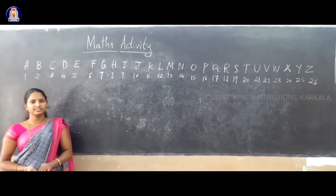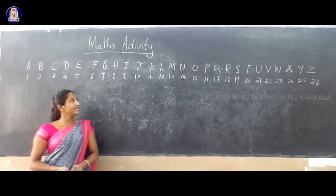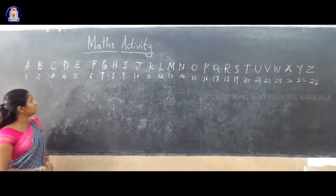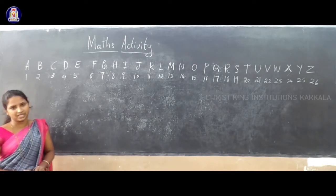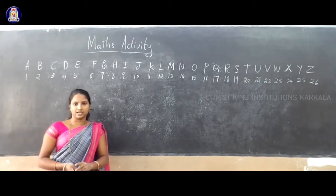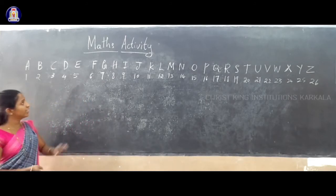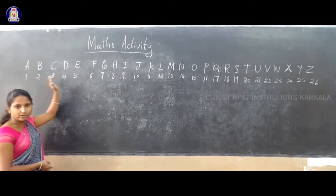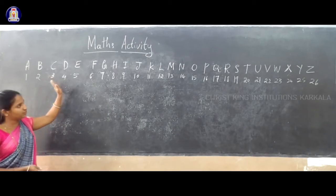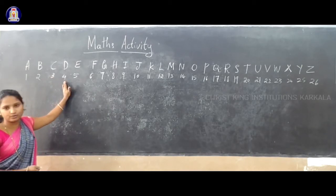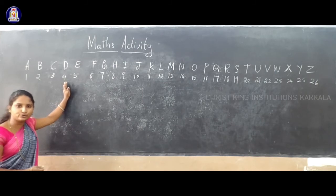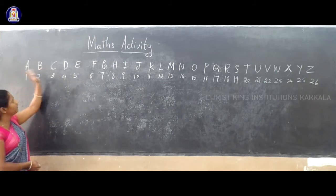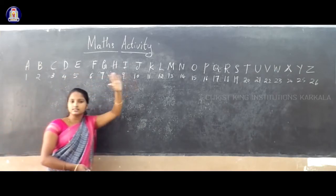That is today's session. I am going to do a maths activity. This activity is related to the integer chapter. After learning the integer chapter, you can practice learning integers by using this activity. You can do this activity in a form. First, what you have to do? You have to write the alphabets — A to Z — like A, B, C, D up to Z.